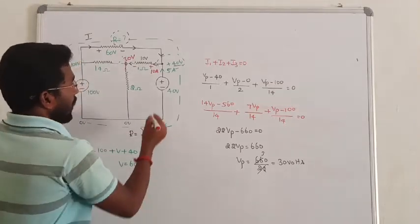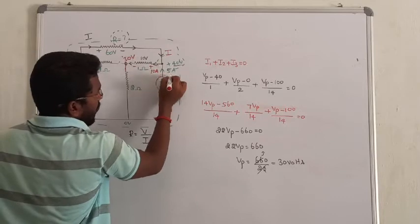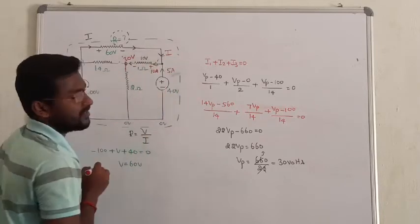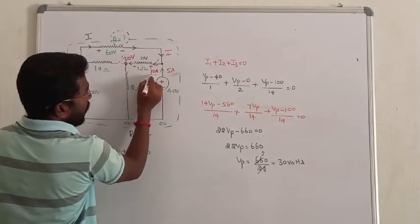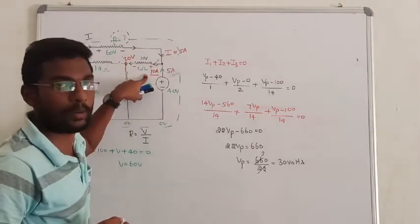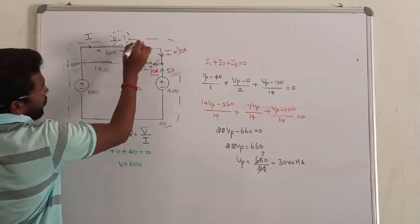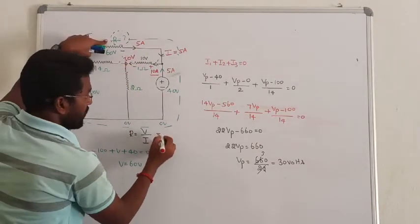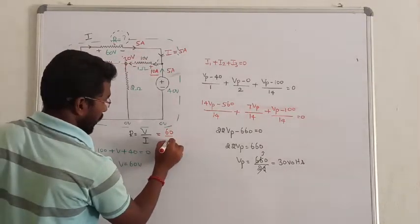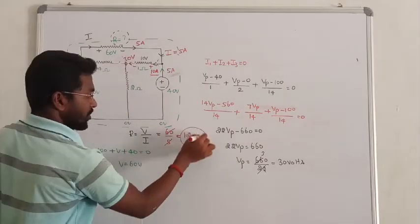Question is almost done. If we have total current — this current is 5A and this current is 5A. The incoming current is I, and this current is 10A. This current must be 5A, because only 5 plus 5 will give you 10A. So this current is 5A. Now, resistance R equals: the drop wire voltage is 60V, divided by the current flowing through it, which is 5A. So how much is it? 12 ohms. So the answer for our question is R equals 12 ohms.